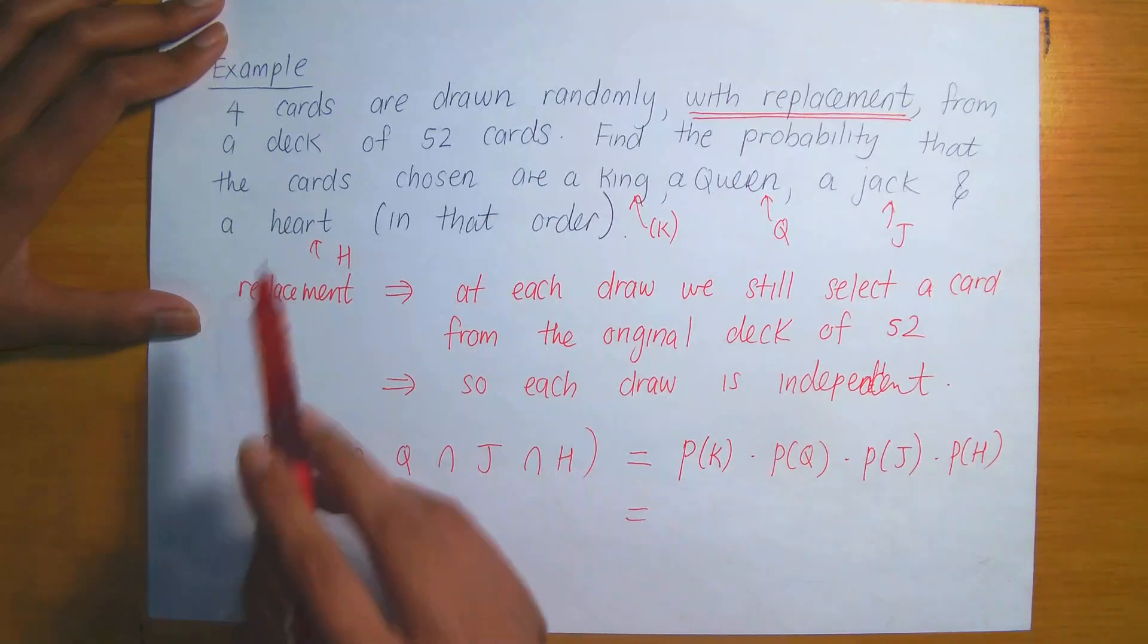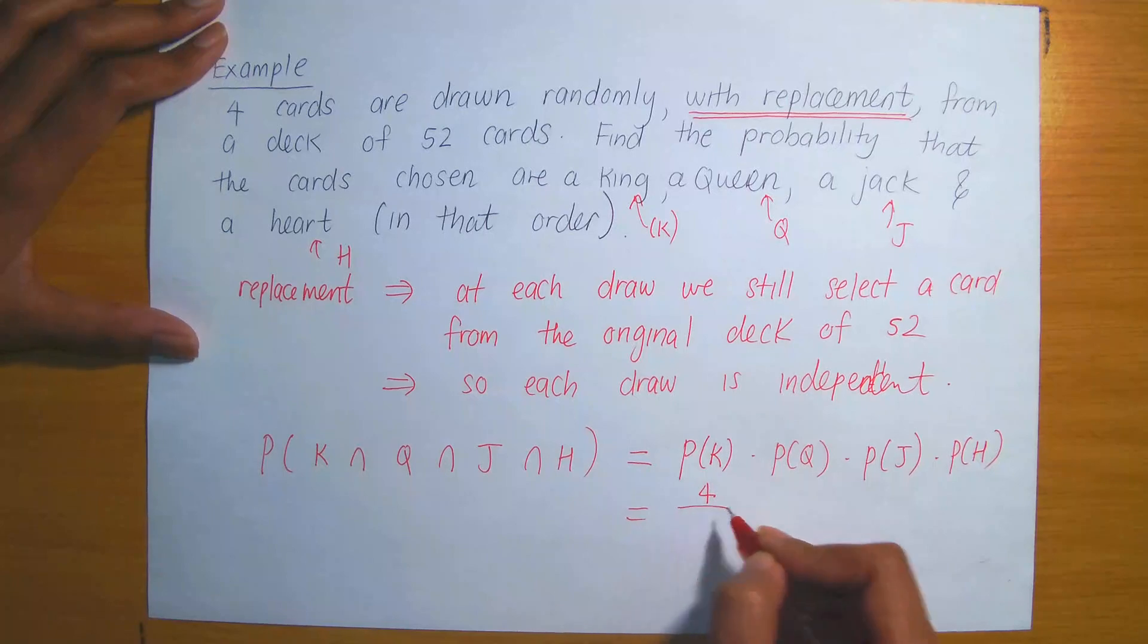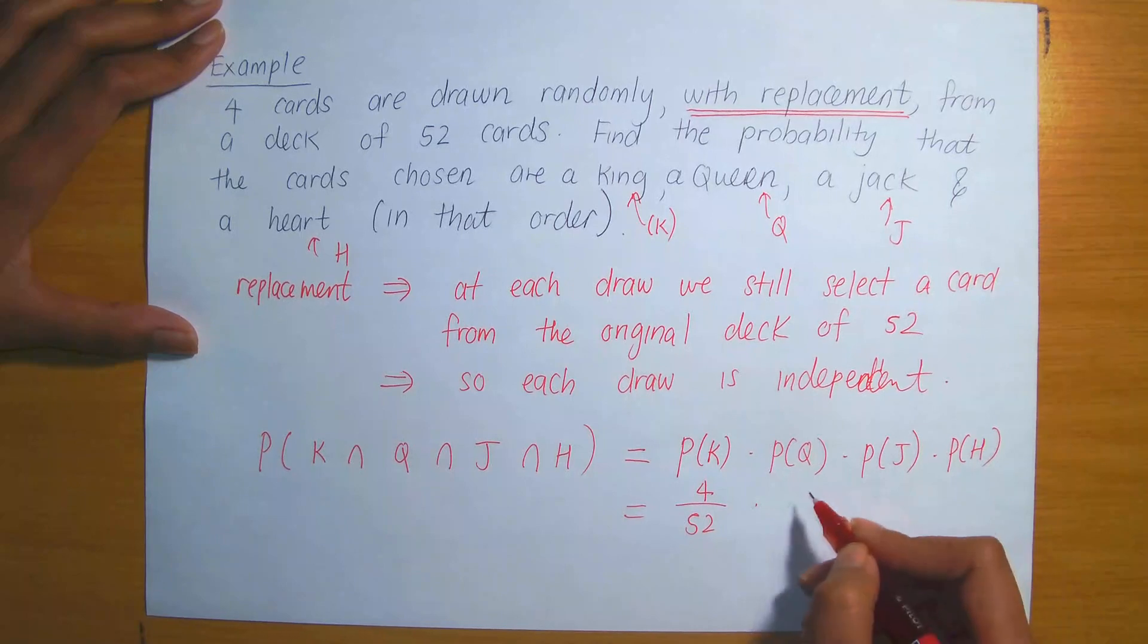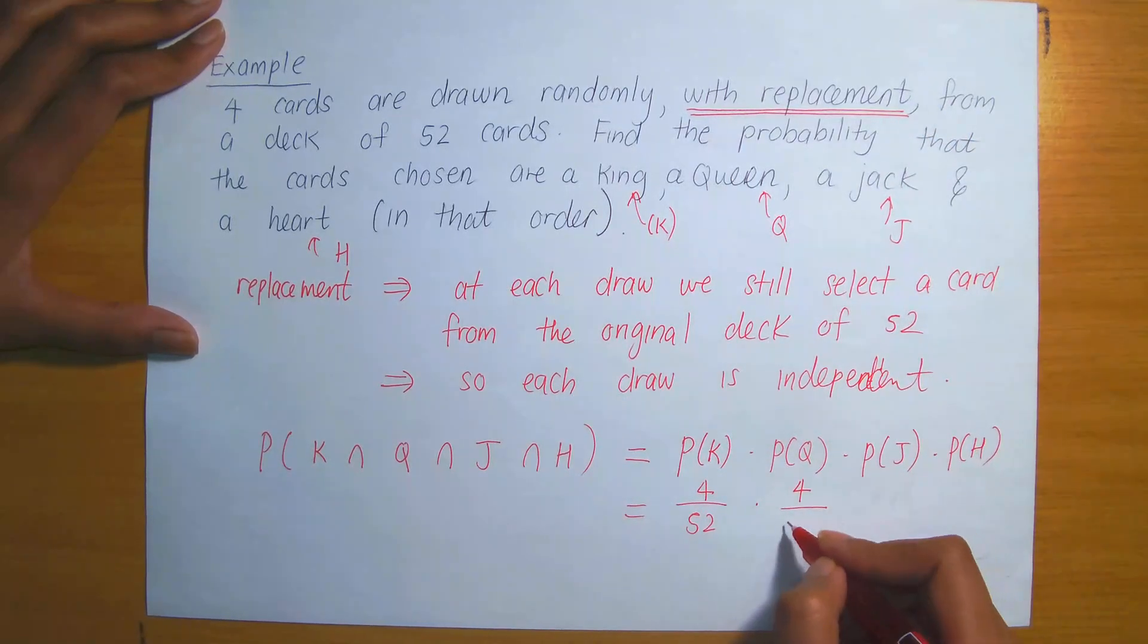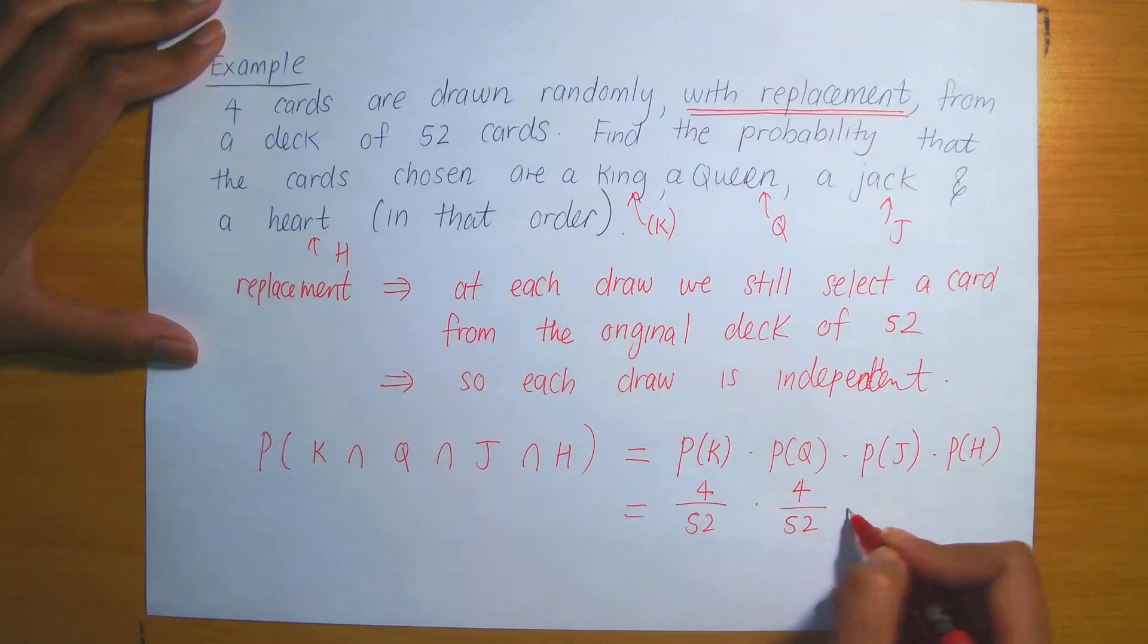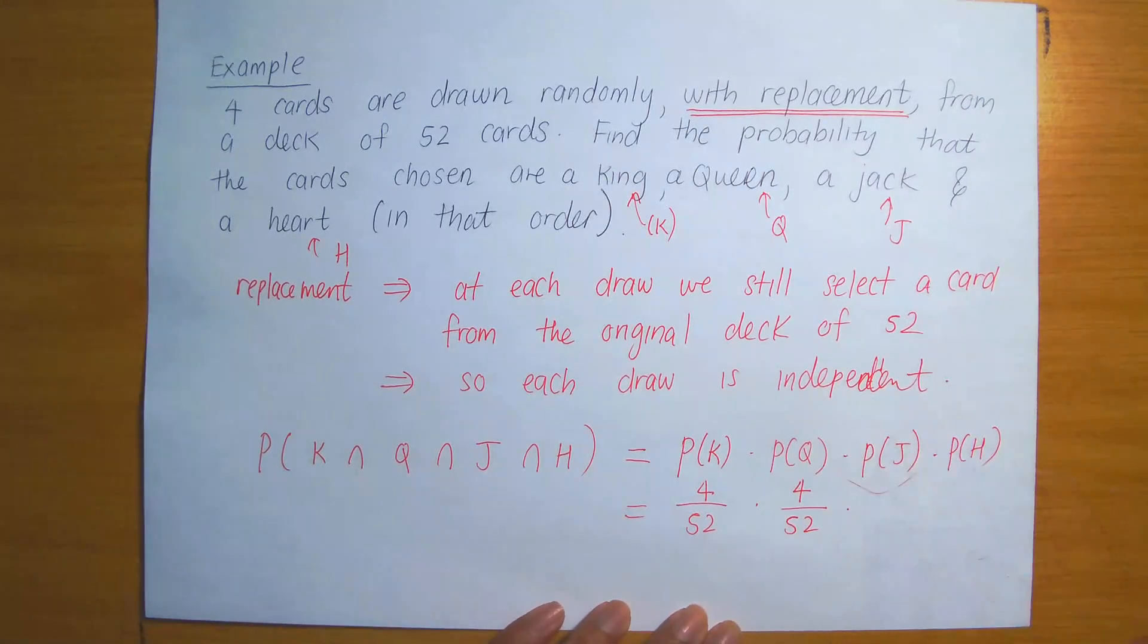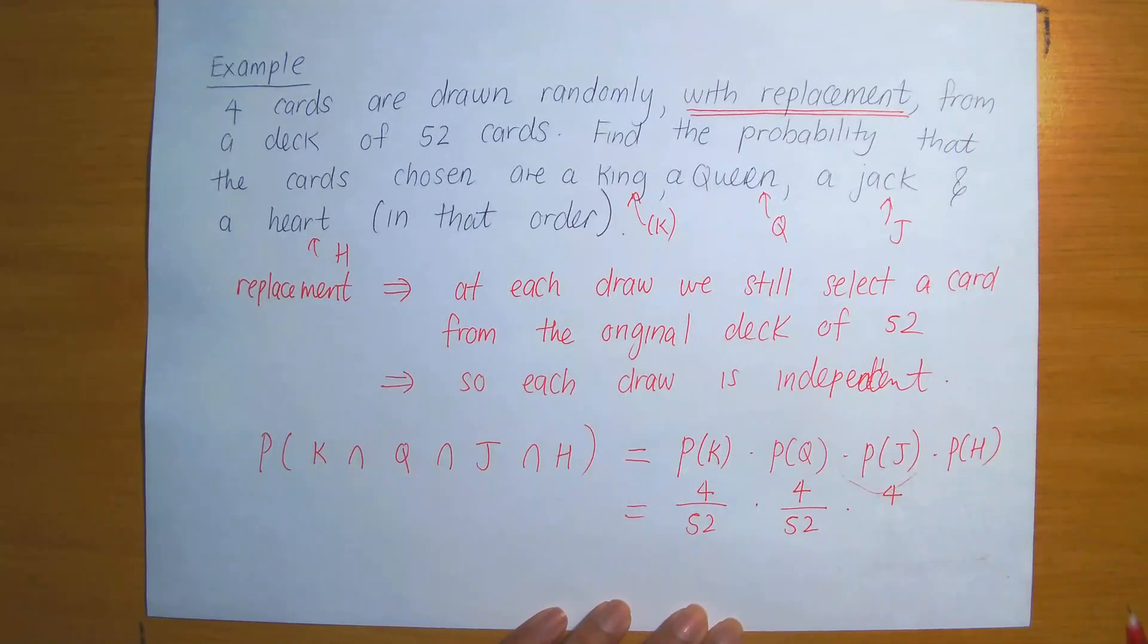So how many kings do we have in a deck of 52 cards? We have four kings. So there are only four possible ways in which you could select a king, and the total sample space is made up of 52. And how many ways can we select a queen? Once again, there's four ways. Remember, it is four because replacement occurs in each step as well. So this is divided by 52. And now we've got the probability of selecting a jack. And how many ways can you select a jack? We have four jacks in each deck. So once again, four over 52.